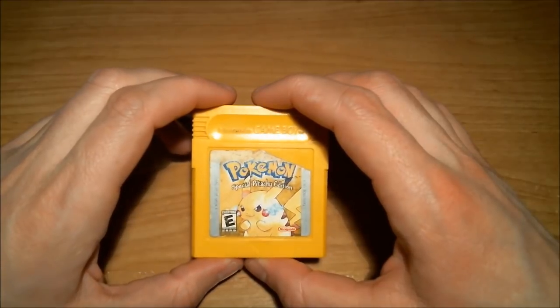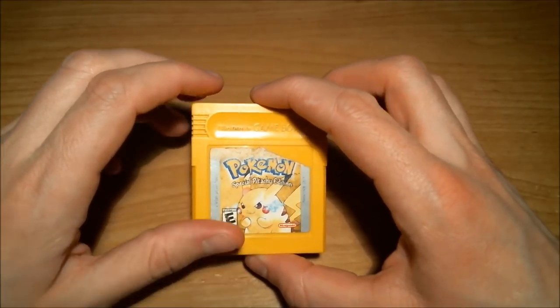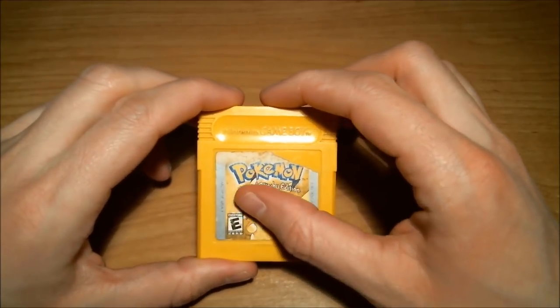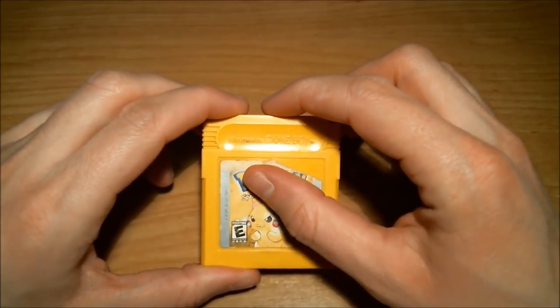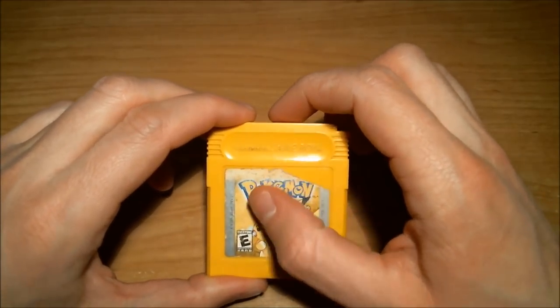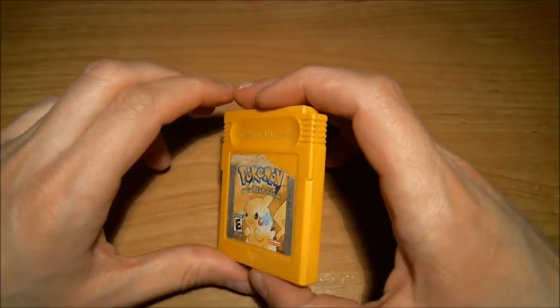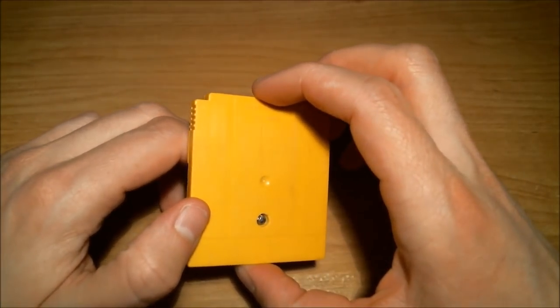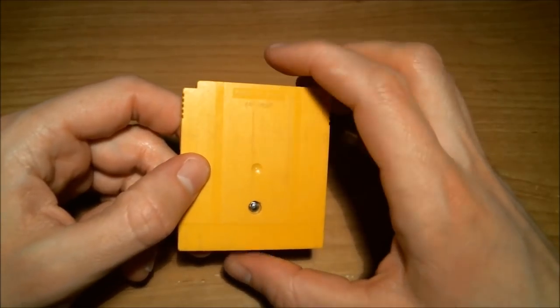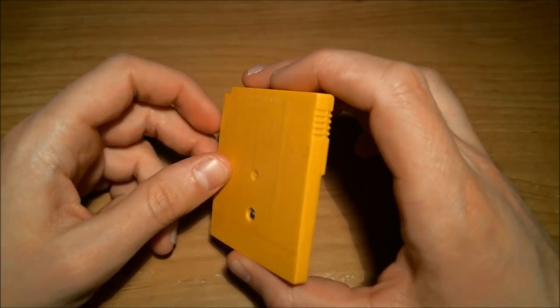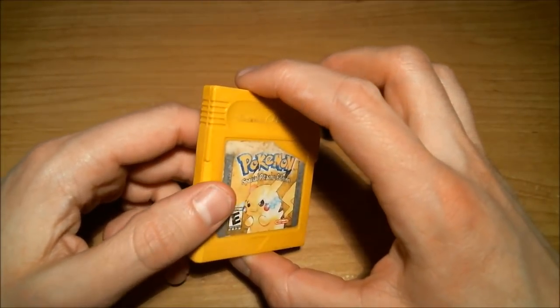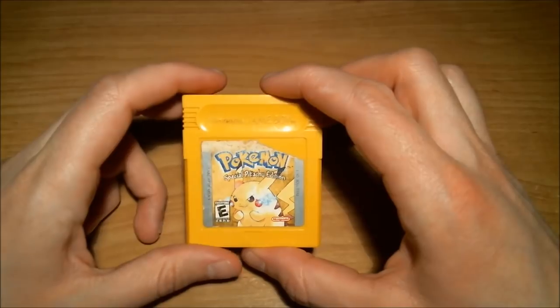So what I'm going to do here today is to clean up the exterior of this cartridge with a Q-tip and a little bit of isopropyl rubbing alcohol to try and get some of this dirt off. And then I will be opening it up, and replacing that little coin cell battery.